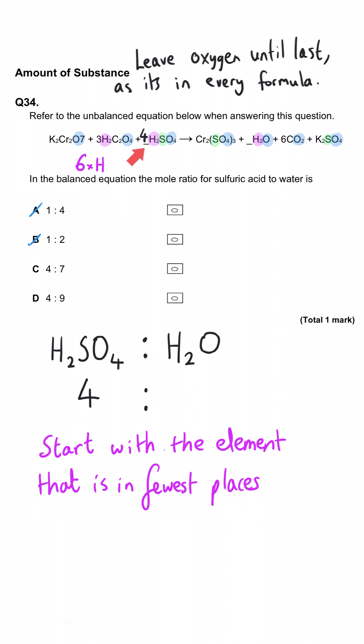And we've got this four that we've just put in front of the H2SO4. So four times two is eight. So we've got our eight plus our six, which gives us 14 hydrogen on the left hand side, which means we need seven H2O on the right hand side to balance for that. And the ratio is therefore four to seven and it's C.